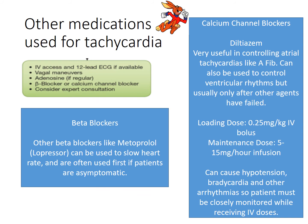Diltiazem can be given as a continuous infusion. It can also be used for ventricular rhythms, but it's not usually the first choice. The loading dose is 0.25 milligrams per kilogram IV bolus, then maintained at 5 to 15 milligrams per hour. Watch for hypotension, bradycardia, and other arrhythmias. It's usually titrated for heart rate and blood pressure — a typical order might be: titrate for heart rate less than 100 and blood pressure greater than 90. They must be monitored while receiving IV doses.